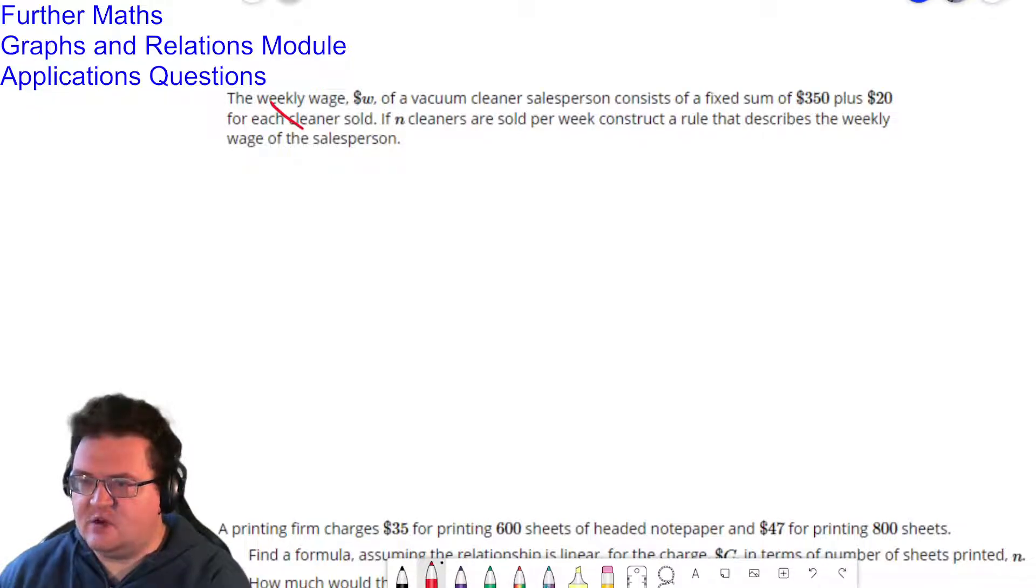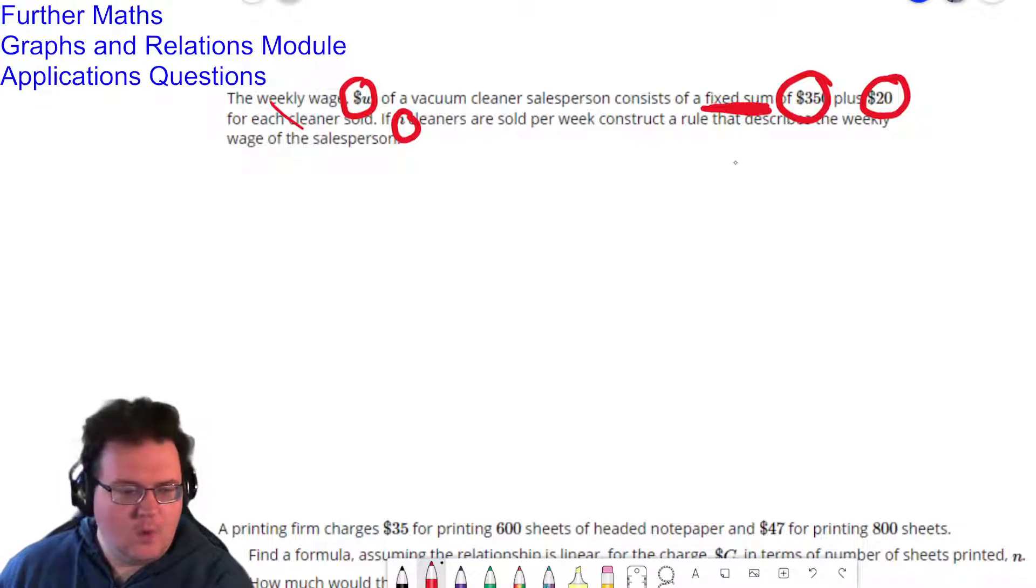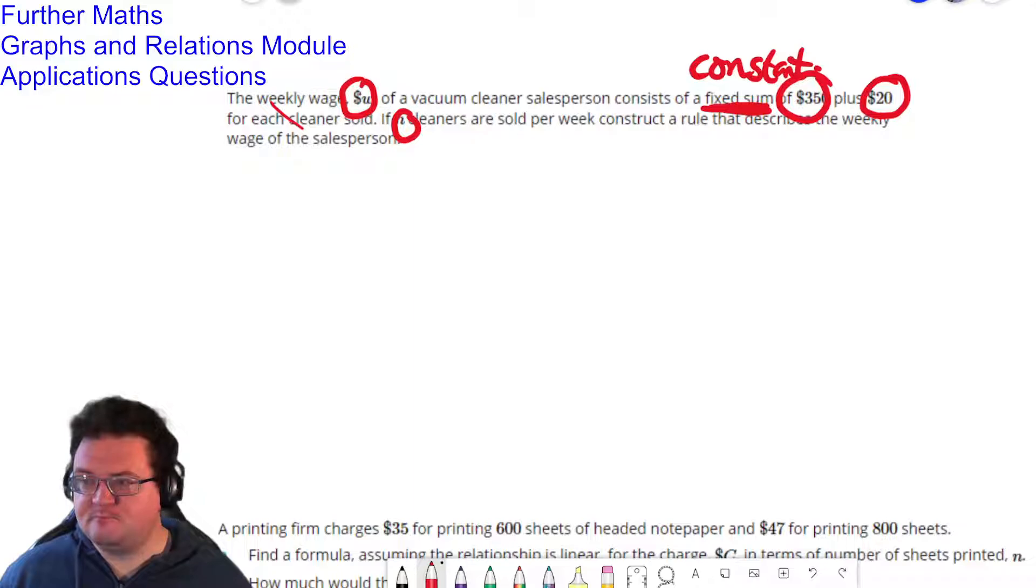So the important things that we need to think about are the W, the $350, the $20 and the N. Now the other important words in here are fixed sum. When we talk about things being a fixed sum, what does that mean in plain English? It means that it doesn't change. So fixed sum screams out to me constant. So that means that whatever equation I create is going to have a constant at the end of it.